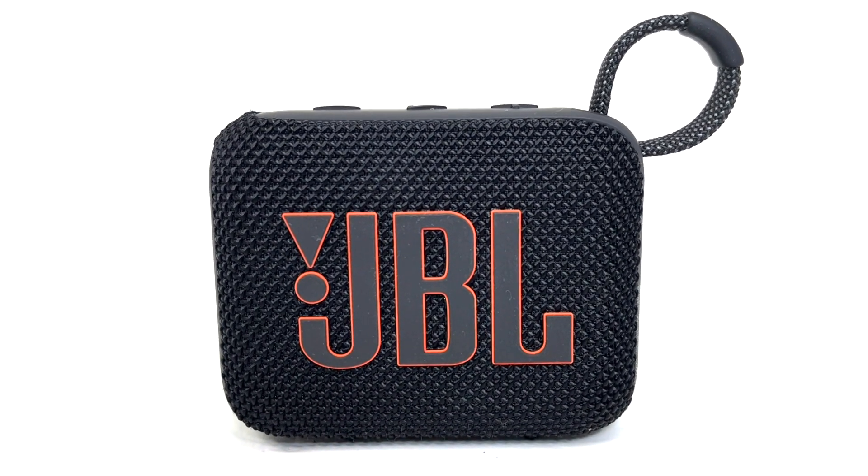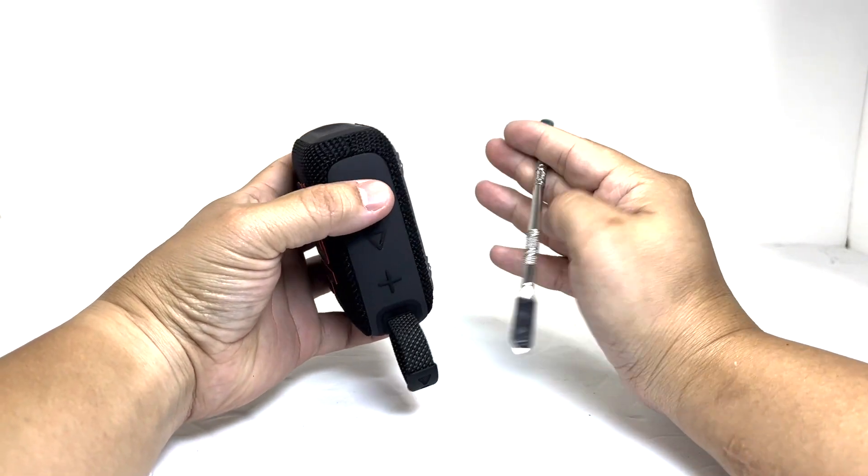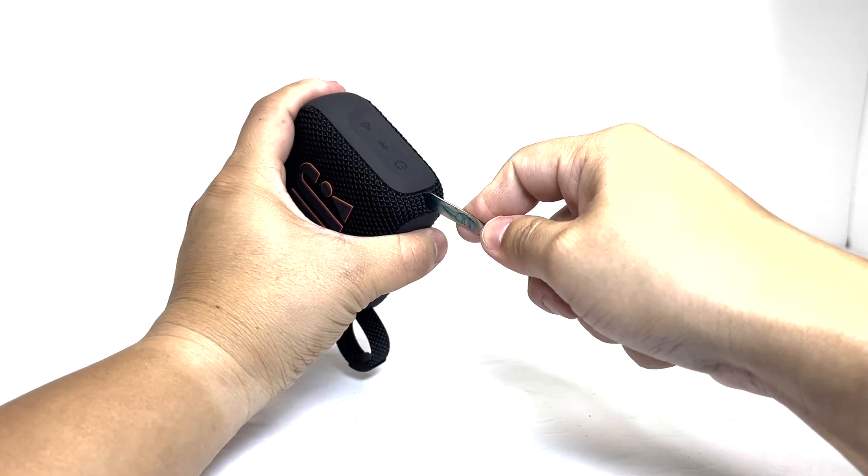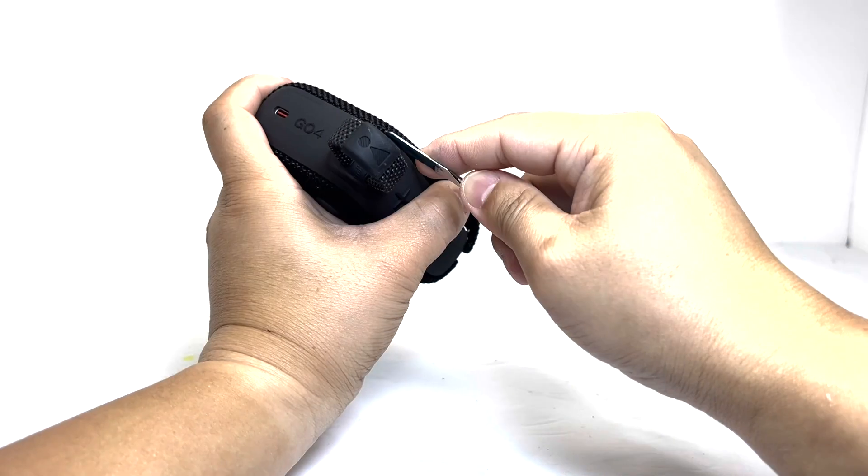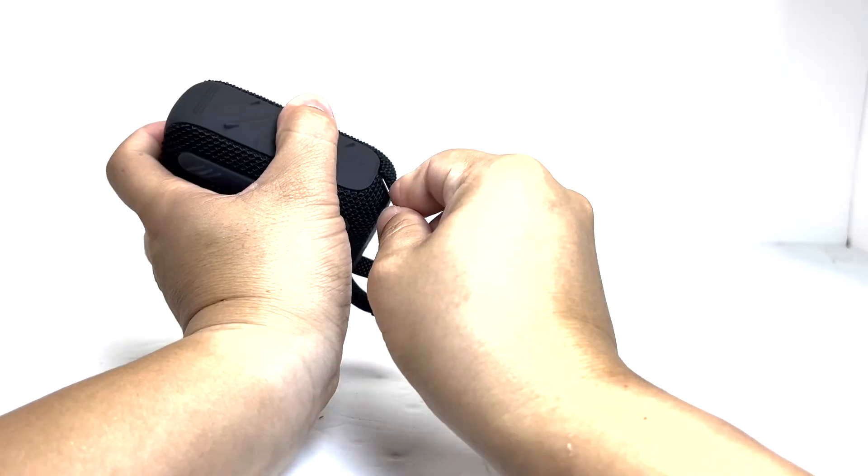So join me as we take apart the JBL GO 4. First thing we'll do is gently pry off the front cover. It is held in place by a few clips, so take your time to avoid breaking them.